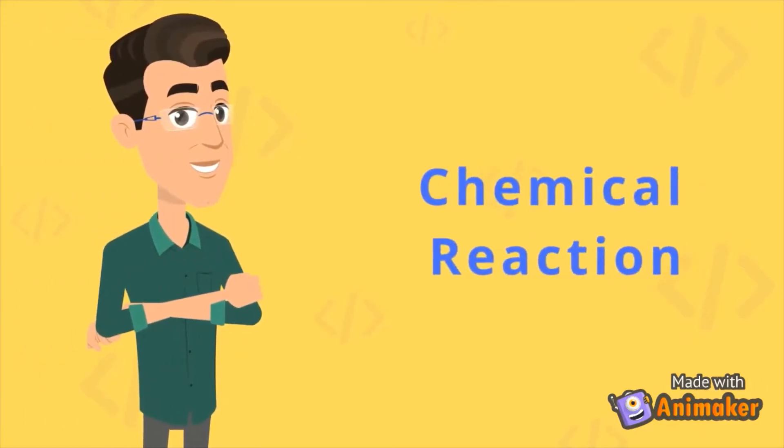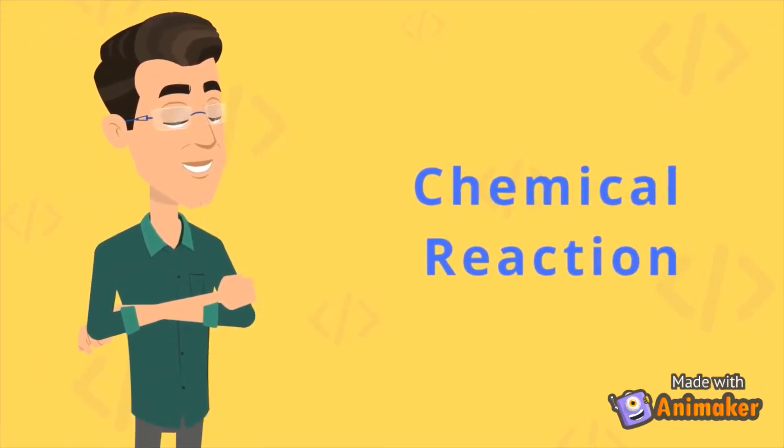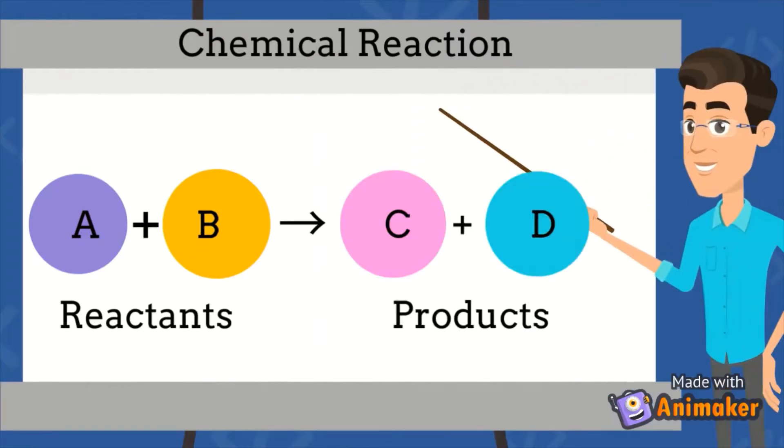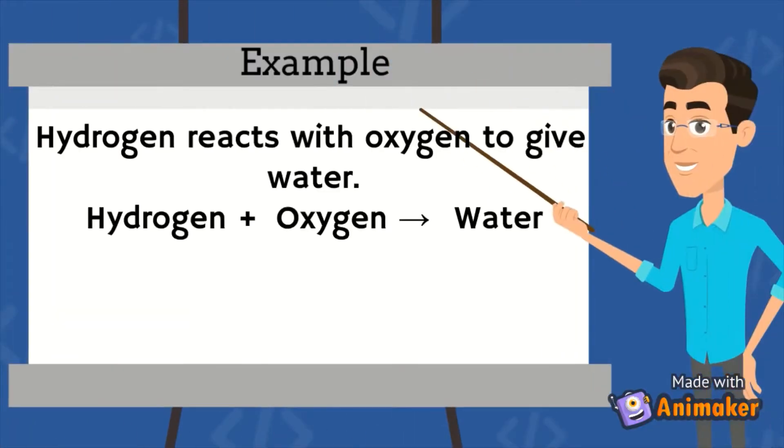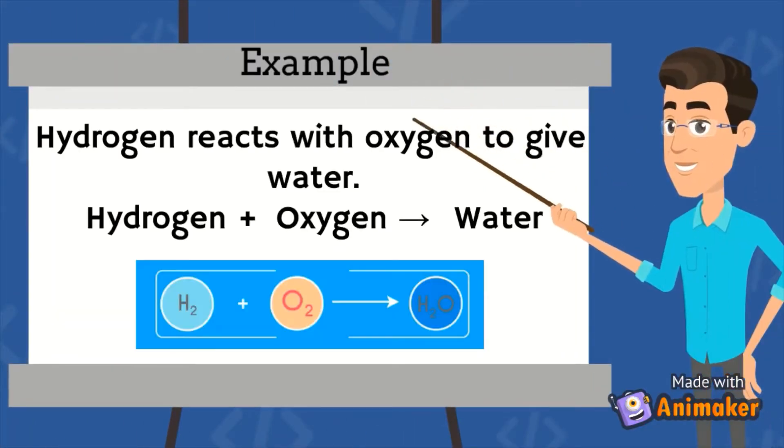Hello friends. Today we will learn about chemical reaction. Two reactants react with each other to give new products. This is a chemical equation. For example, hydrogen reacts with oxygen to give water.